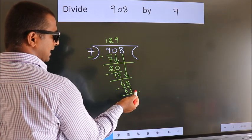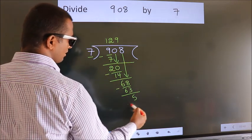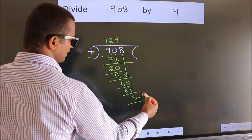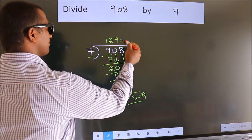No more numbers to bring it down. So, we stop here. This is our remainder. This is our quotient.